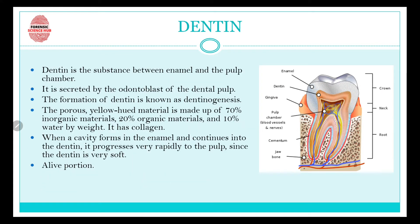Now let's talk about dentine. Dentine is a substance present between the enamel and the pulp chamber. It is secreted by the odontoblast cells of the dental pulp. The formation of dentine is known as dentinogenesis. Dentine is a porous, yellow-hued material made up of 70% inorganic material, 20% organic material, and 10% water by weight. It has collagen. When a cavity forms in the enamel and continues into the dentine, it progresses very rapidly to the pulp since dentine is very soft, which is why we feel sensitivity in our teeth.